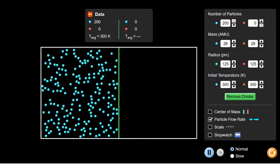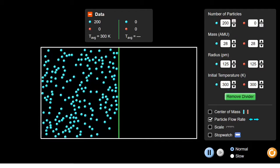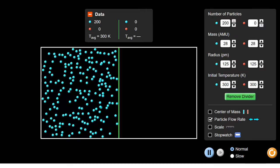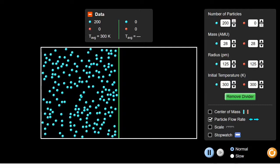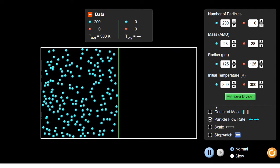When we remove the divider they're going to continue this behavior, but each particle will now have the chance to randomly make its way, through collisions, into the other half of the container. The arrows at the bottom are going to show the flow of particles from one side of the container to the other.